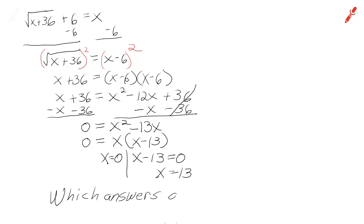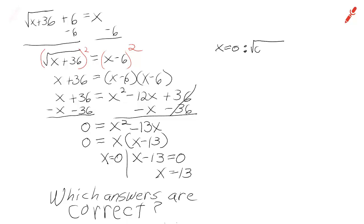Sometimes none of the answers work, sometimes only one of the answers works, sometimes both of the answers work. So we're going to have to work them out for both. If x equals 0, I substitute 0 for x in the original equation. The square root of 0 plus 36 is the square root of 36, which gives us 6. 6 plus 6 does not equal 0.